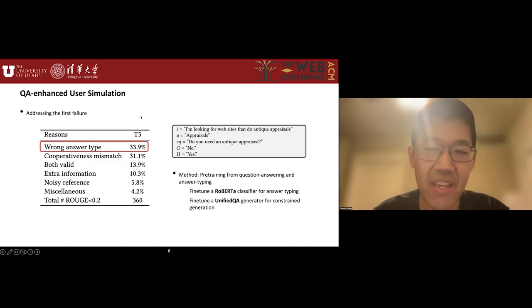The most common generation failure is generating the wrong answer type, where the generated and human-generated answers have opposite meanings. This is usually because T5 fails to understand the semantic similarity or differences between the intent and the clarifying question. From the observation during our manual analysis, we noticed the similarity between user simulation and question answering, in that both tasks require a response to a question given some contexts. Therefore, we leverage this similarity, which is never mentioned by previous approaches. Our method is to fine-tune a RoBERTa classifier as an answer typing classifier and fine-tune a UnifiedQA as a generator. The type predicted from RoBERTa will be used to constrain the generation of UnifiedQA.